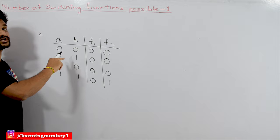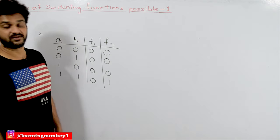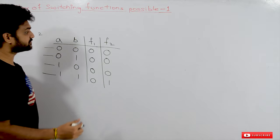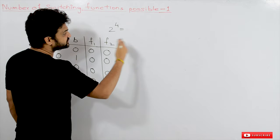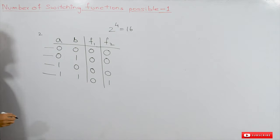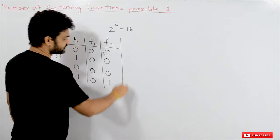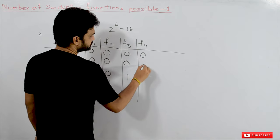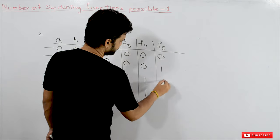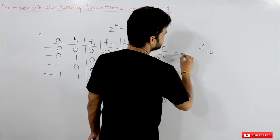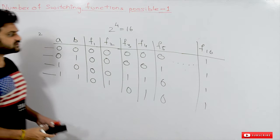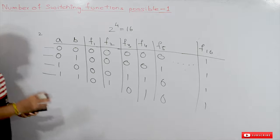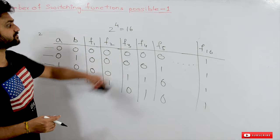With two variables and four combinations, the number of different functions possible is 2 power 4, which equals sixteen. So for example F3 is 0 0 1 0, F4 is 0 0 1 1, F5 is 0 1 0 0, and so on up to F16, the sixteenth possible function. These are the different types of functions possible.